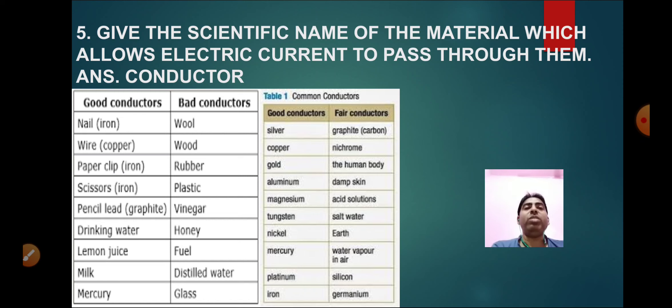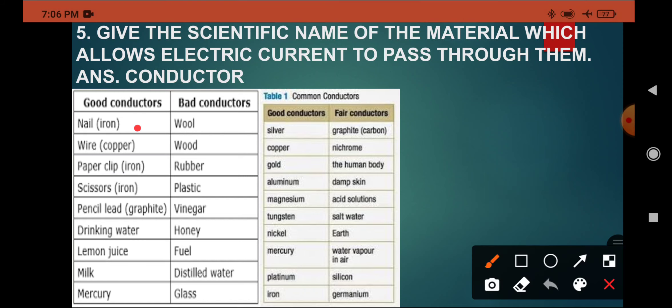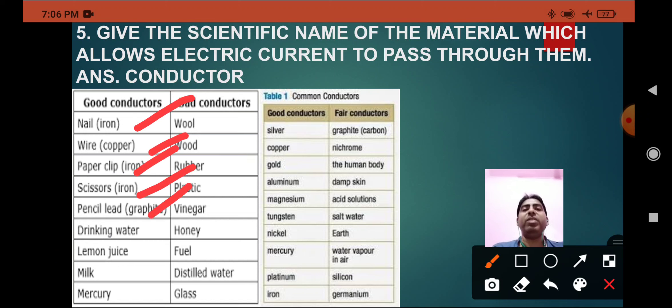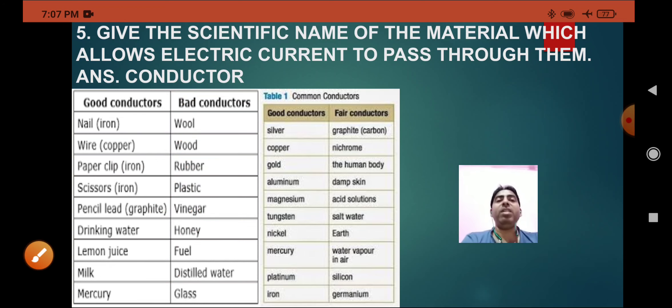I have written some good conductors: nail, iron nail is a good conductor, copper is a good conductor, paper clip is a good conductor, scissor which is a good conductor, graphite pencil lead. This is an exception. Graphite is an exception because it's the only non-metal which conducts electricity. Very important question. Drinking water, lemon juice, milk, mercury—these are good conductors.